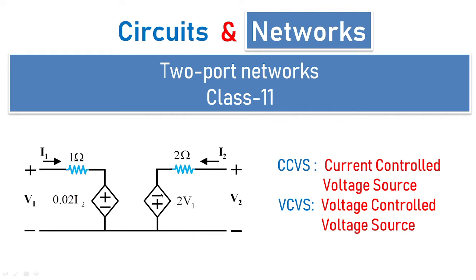At the output port, v2 drives current i2 through 2 ohms into a dependent voltage source. This dependent voltage source has its controlling voltage at the input side, making it a voltage controlled voltage source. This is a special case problem, and we will see how to solve it and determine the different two-port network parameters.